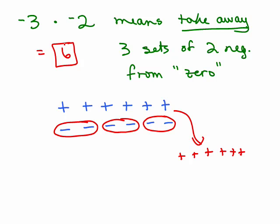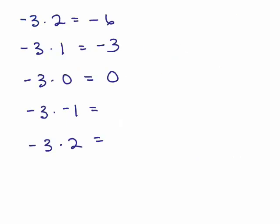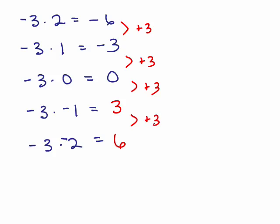So that's one model of seeing why a negative times a negative could possibly make sense as a positive — it's still a little strange, but that's just one model. Here's another model based on patterns. If you believe any number times 0 is 0, then negative 3 times 0 should make sense. The first number is always negative 3, and the second number decreases: multiplying by 2, then 1, then 0, then negative 1, then negative 2. The answers go up by 3 each time, so following the pattern, it makes sense the next numbers would also go up by 3 — justifying why a negative times a negative is a positive.